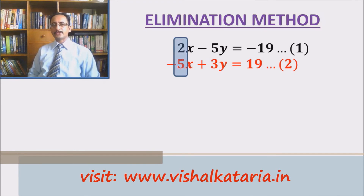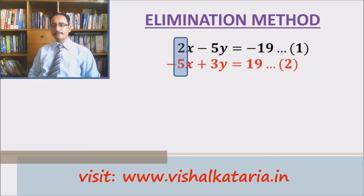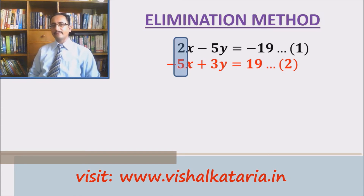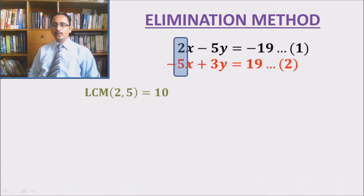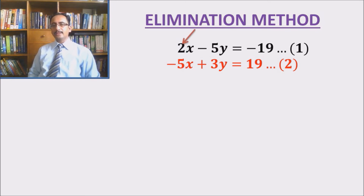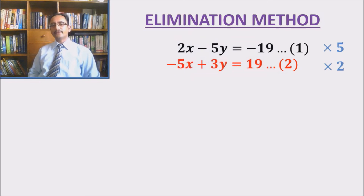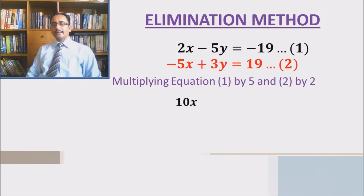Let's make the coefficients of x equal. In the first equation the coefficient of x is 2 and in the second it is minus 5, and the LCM of 2 and 5 is 10. So I will make both coefficients equal to 10 in magnitude. In order to make 2 equal to 10, I need to multiply the first equation by 5, and in order to make 5 equal to 10, I will multiply the second equation by 2. After multiplying, we get another pair of linear equations.